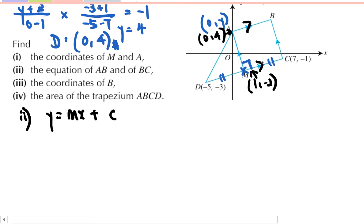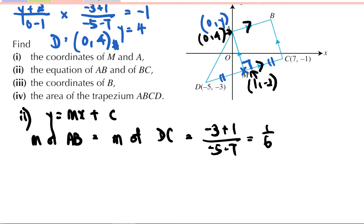AB is parallel to DC. Gradient of AB is parallel to DC means that the gradient of AB is equal to the gradient of DC. So my job is to find the gradient of DC now. So I found the gradient to be 1 over 6.